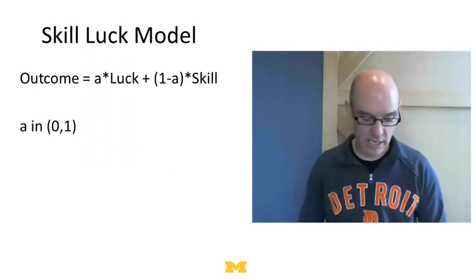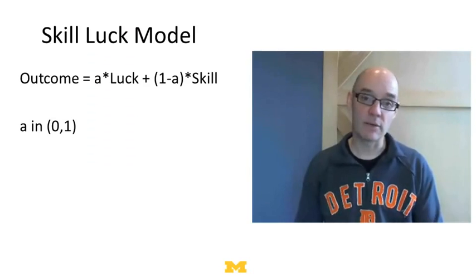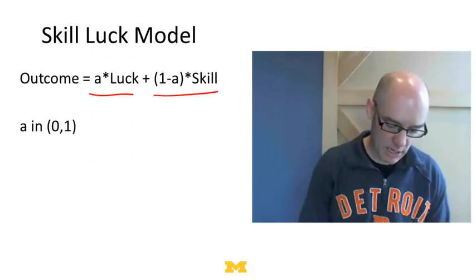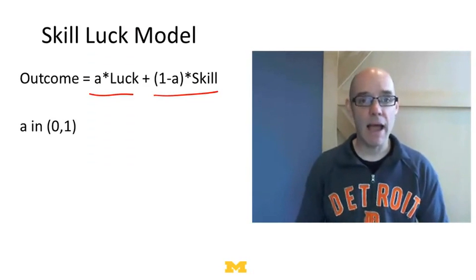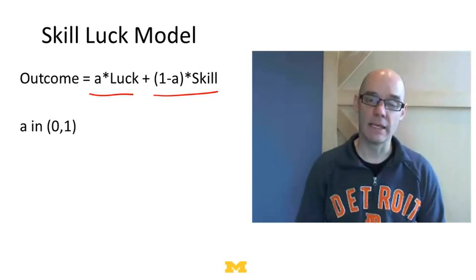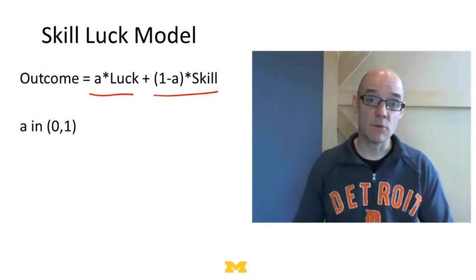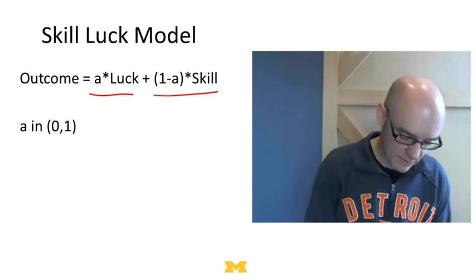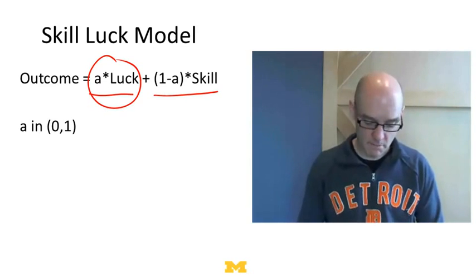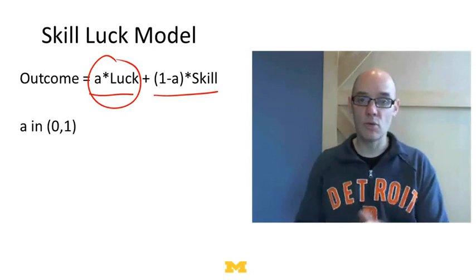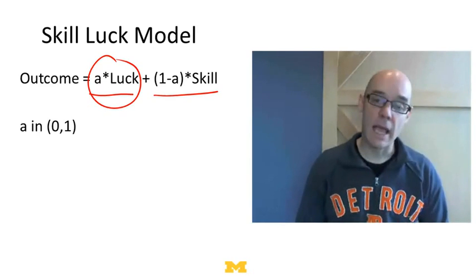There's a book by Michael Mauboussin, who works at Legg Mason as a financial analyst. What Michael does is take a whole bunch of different domains and figure out exactly how much is skill and how much is luck. You can write this in a model as: outcome equals A times luck plus one minus A times skill. To figure out how big A is, you look at a sequence of outcomes. If the same team or firm continues to perform well over time, A is fairly small. But if there are huge jumps from period to period, A is probably pretty big.